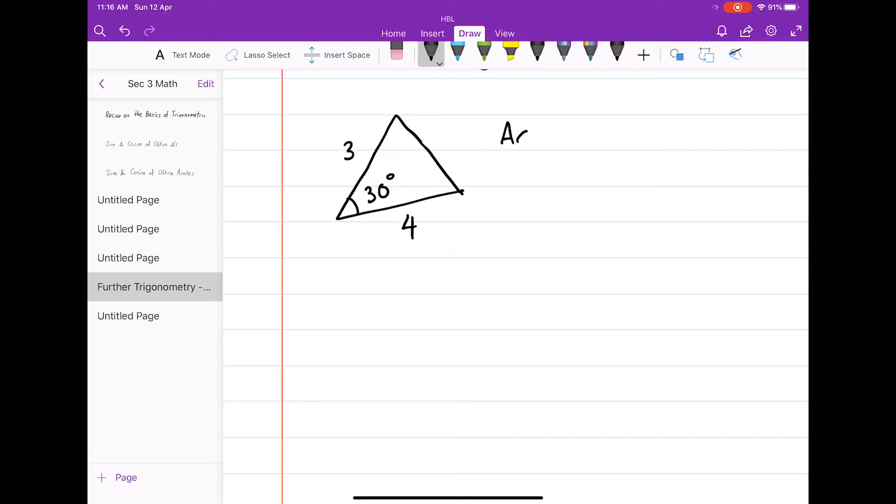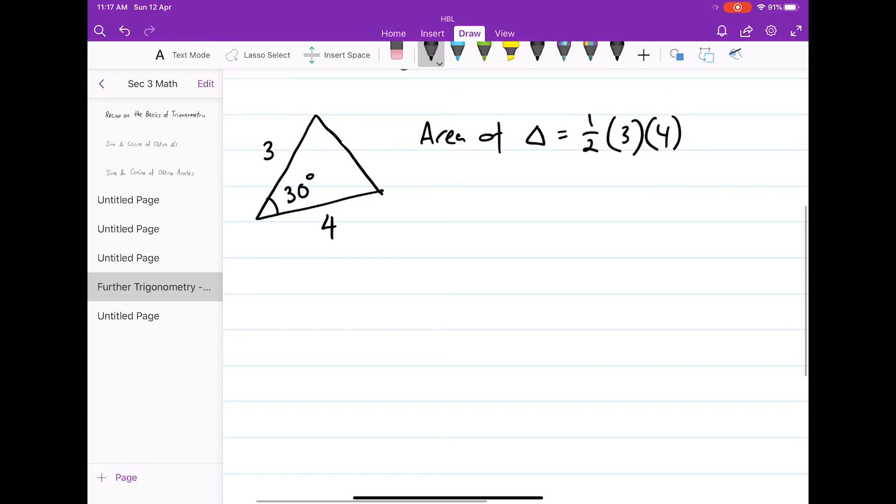The area of this triangle is given by half times 3 times 4 and the sine of 30 degrees, which is equal to 12 over 2. And sine 30 degrees is actually half. And this is 3 units squared.